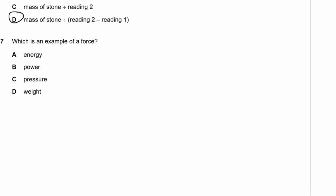Question 7. Which is an example of a force? F = ma, W = mg, and gravity is an acceleration, so weight is a force. Energy is measured in joules, power in watts, pressure in pascals, and weight in newtons — the same unit as force. The answer is D: weight.